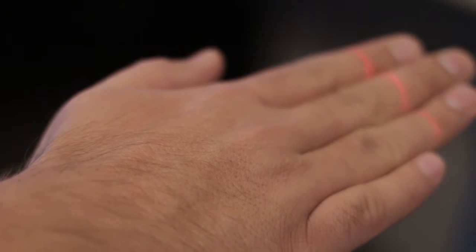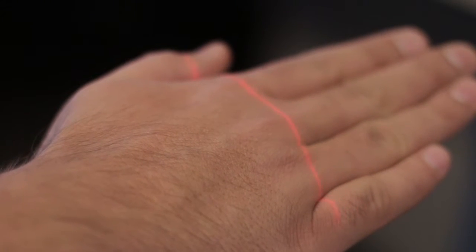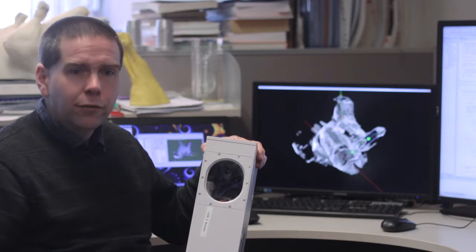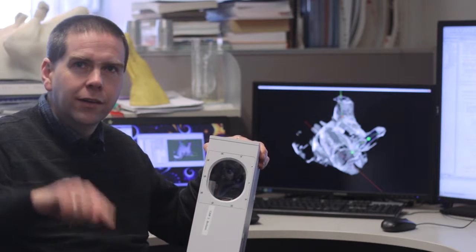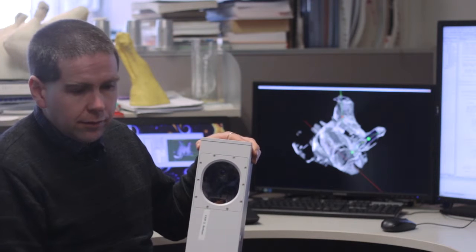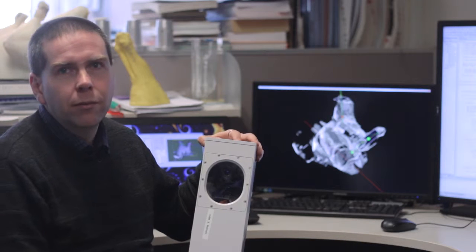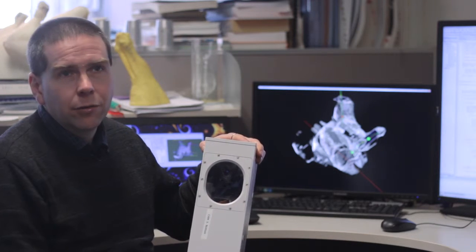They basically project a sheet of light out from one end and a camera watches where that laser line intersects the product. As we move the product through, we get a series of profiles that let us build up the whole shape of the animal. They're very accurate, typically well under a millimeter accuracy, which is more than we need for the robot. But they are typically also slow.